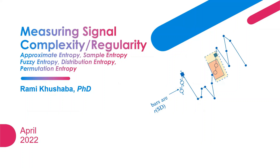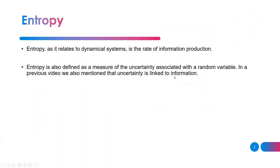These approaches can be applied on any kind of signals or time series data, and there are numerous measures that we can look at. But we have picked for today approximate entropy, sample entropy, fuzzy entropy, distribution entropy, and permutation entropy. They all have some sort of commonality, and we thought about exploring that commonality to help people understand the concept behind these measures.